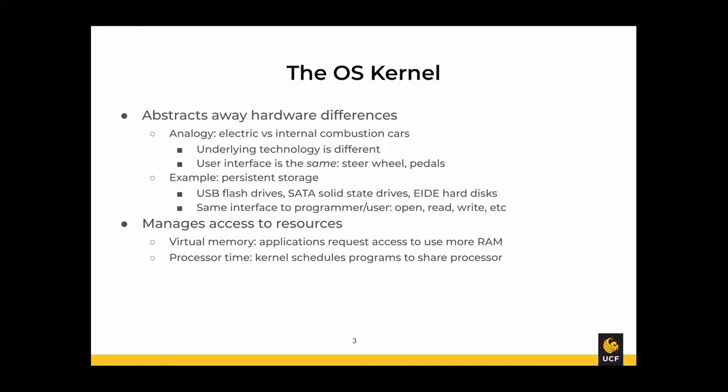The OS kernel has infrastructure to hide all the details of that hardware. In addition to abstracting hardware differences, the kernel manages access to resources through virtual memory. Applications cannot directly access physical RAM; instead they make a request through a system call — the API the kernel defines — to request more RAM. The kernel invisibly manages data stored in RAM by moving it to and from physical storage, providing an idealized view of an enormous amount of memory while managing when it's actually backed by physical RAM.